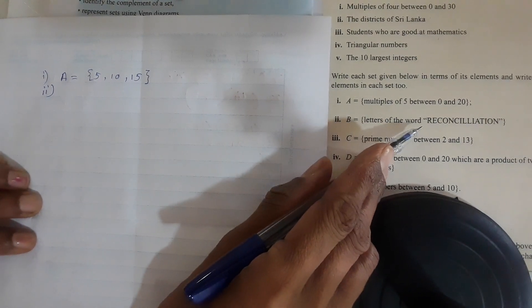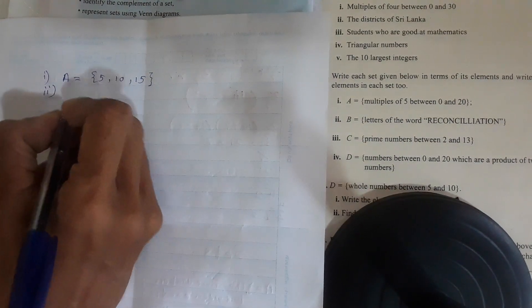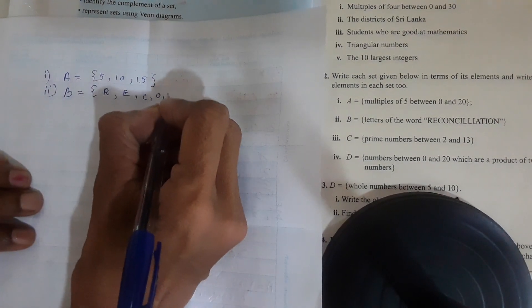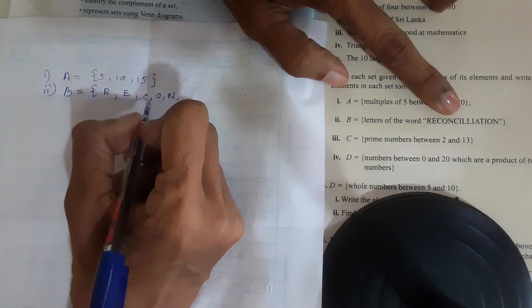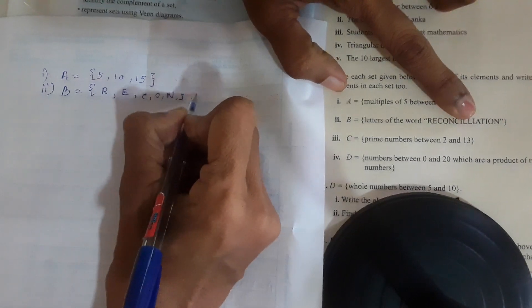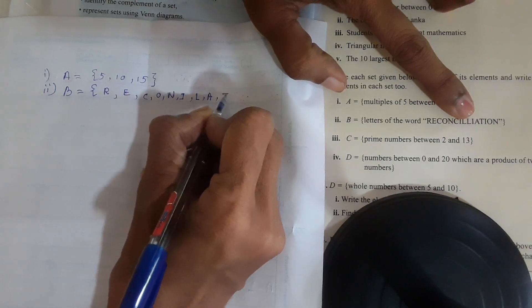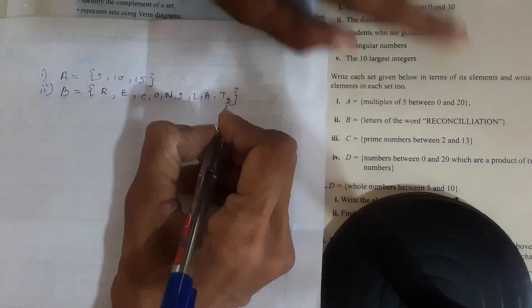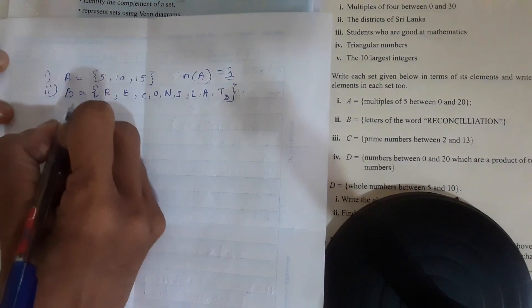Second one: letters of the word RECONCILIATION. The set B is equal to R, E, C, O, N. Again C, but we are not right. Only one element is written one time. N, A. Three elements. Number of B: nine.